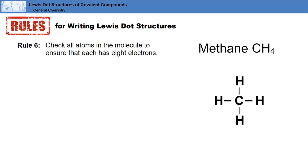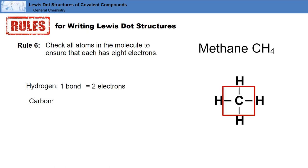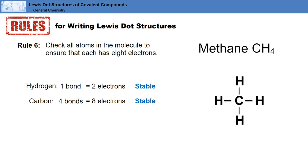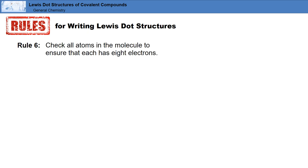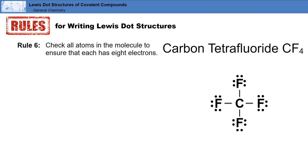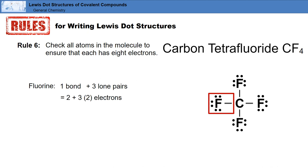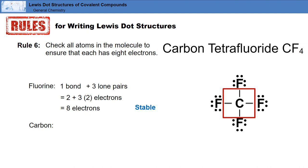Now let's apply rule six to CH4, or methane. Hydrogen has one bond, which equals two electrons, and carbon has four bonds, which equals eight electrons. So both molecules are stable. Let's see how rule six applies to CF4, or carbon tetrafluoride. Fluorine has one bond with three lone pairs. This equals two plus three times two electrons for a total of eight electrons — it's now stable. Carbon has four bonds, equaling eight electrons, and is also stable.